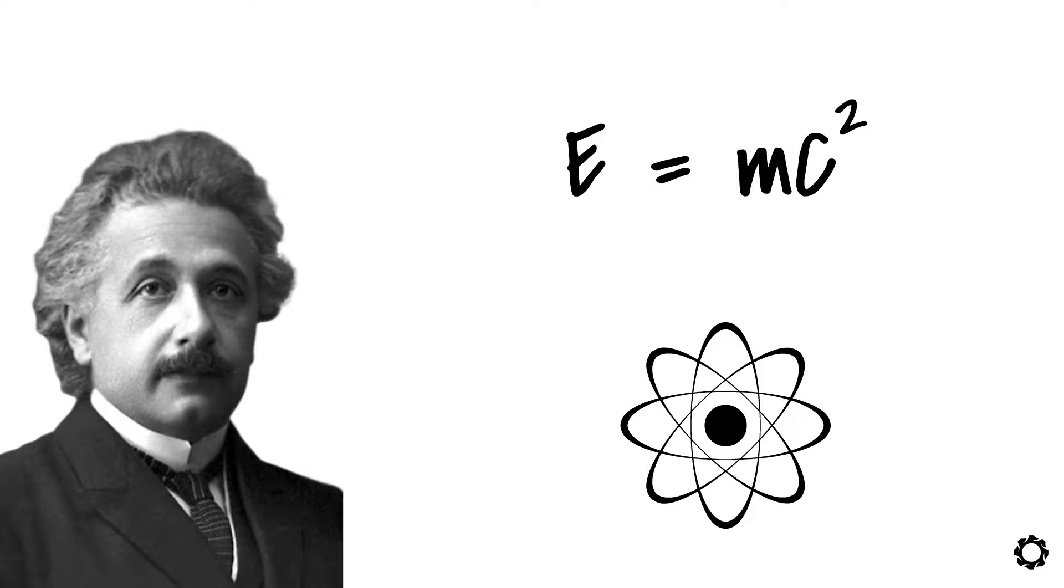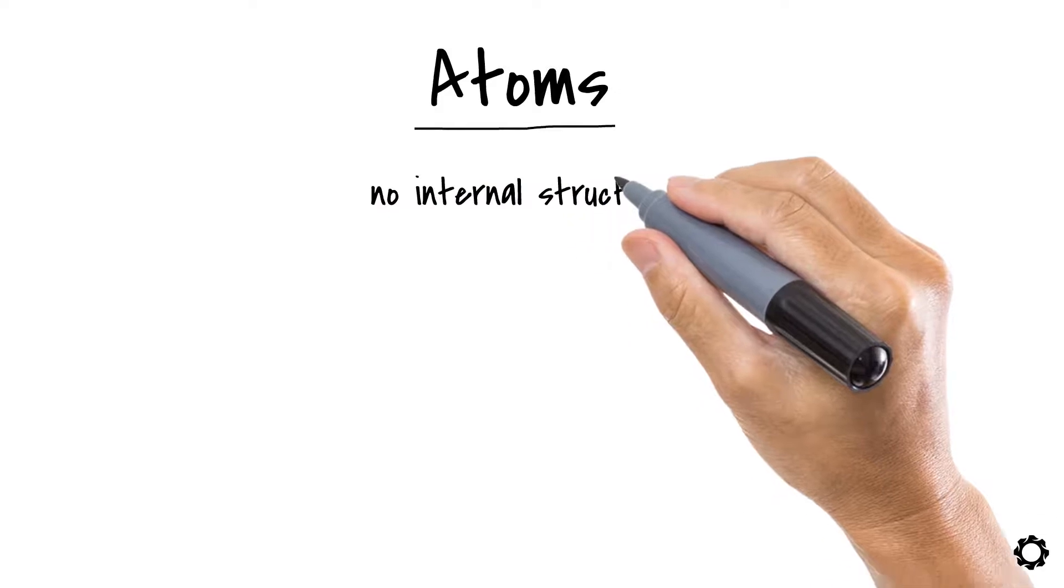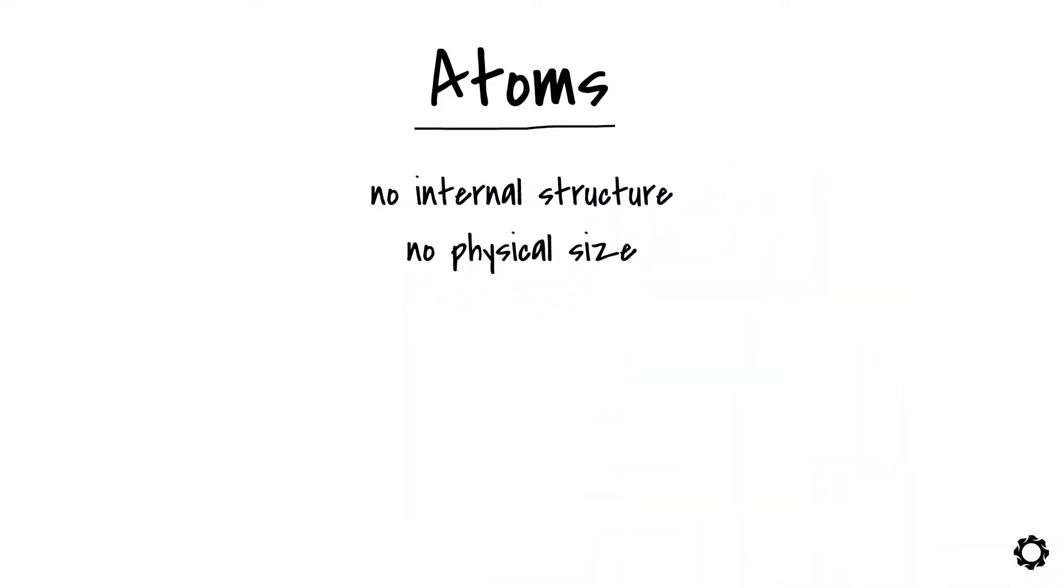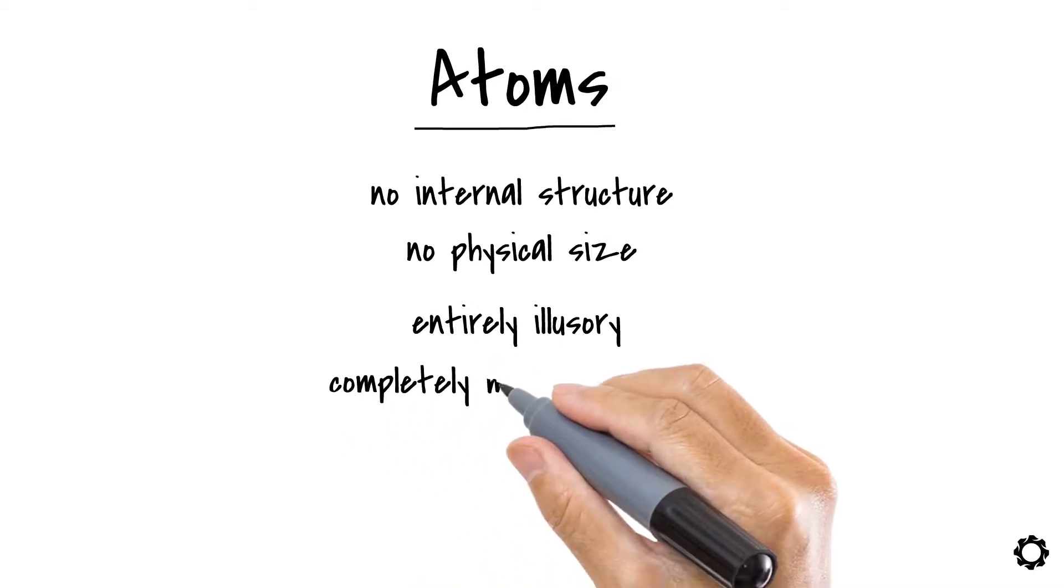In addition, it turns out that atoms do not have the planet-like structures that we are used to seeing, with electrons whizzing around. Atoms have no internal structure and no physical size, meaning that they are entirely illusory and completely made up of energy.